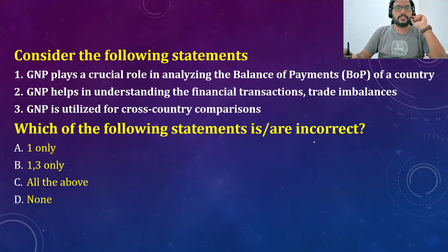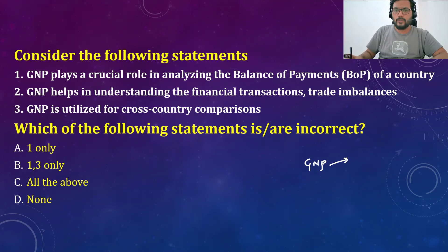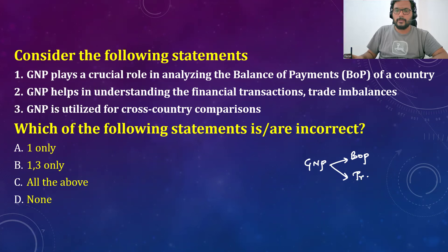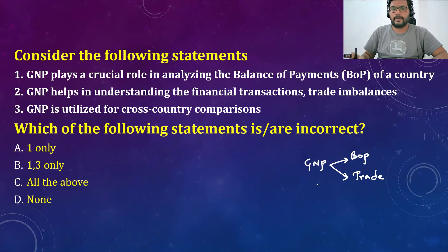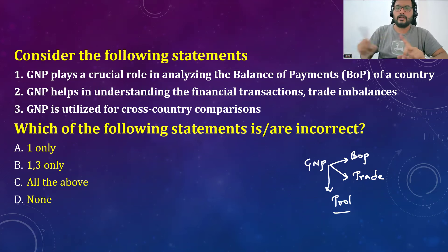The first question: consider the following statements. First, GNP plays a crucial role in analyzing the balance of payment. Second, GNP helps in understanding the financial transactions and trade imbalances. Third, GNP is utilized for cross-country comparisons — GNP is accepted as a global tool for comparing the growth rate of countries like India with other countries. The question asks which statement is incorrect.